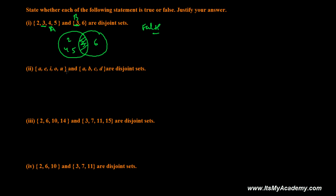Now {A, E, I, O, U} and {A, B, C, D}. Again, at the first one you got A - A is common. So since it is common, it's not Disjoint Sets.